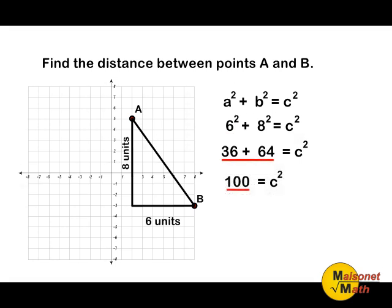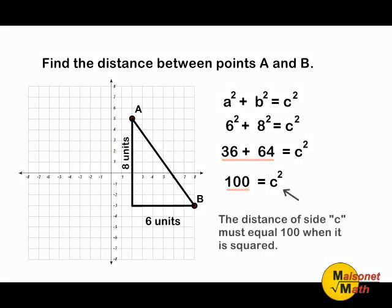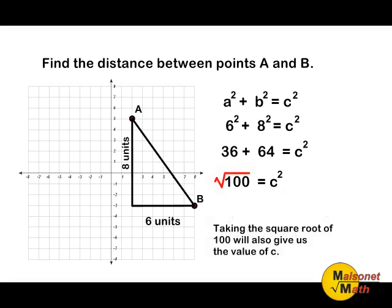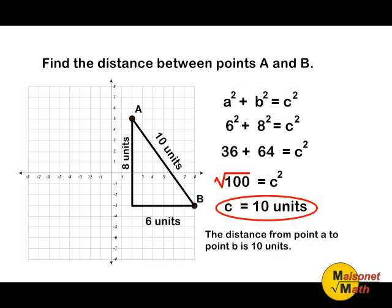36 plus 64 is 100. Whatever the length of C is must be a value that, when squared, will equal 100 units. The only thing that you can square to make 100 is 10, so C must be equal to 10. Or you may simply take the sum of the squares of A and B and find the square root of that sum. The square root of 100 is 10, so now we know that the distance between points A and B is 10 units.